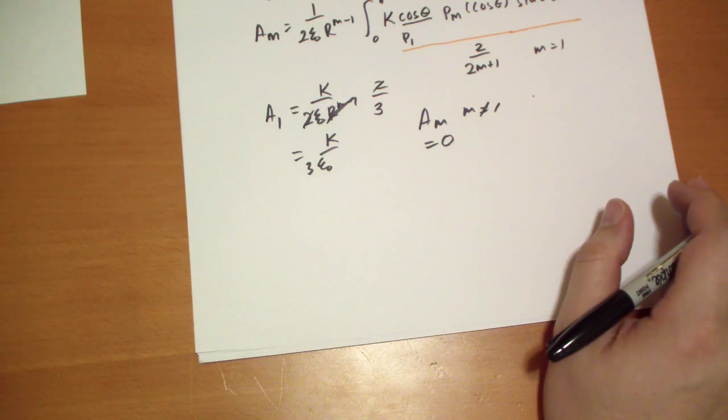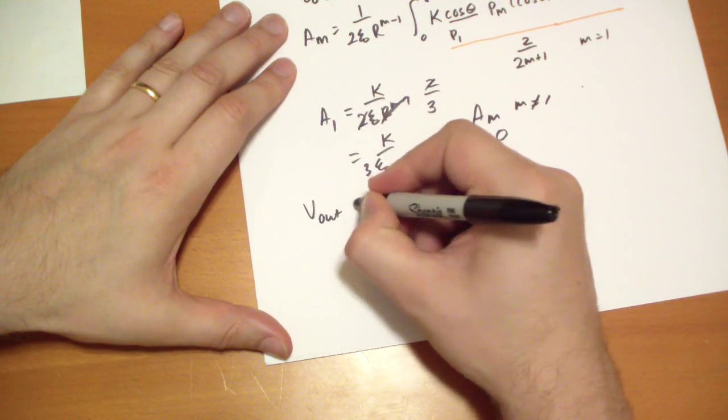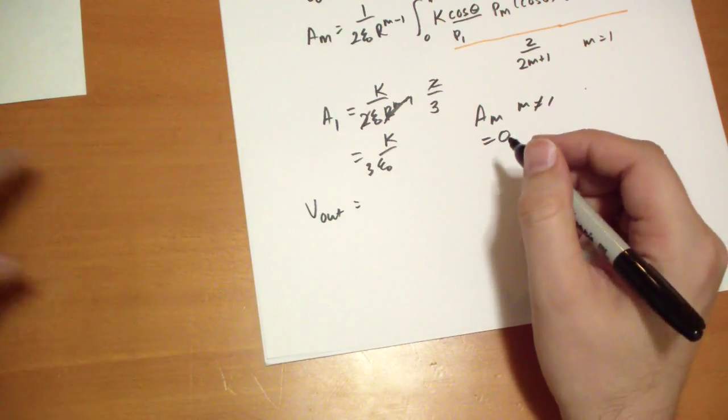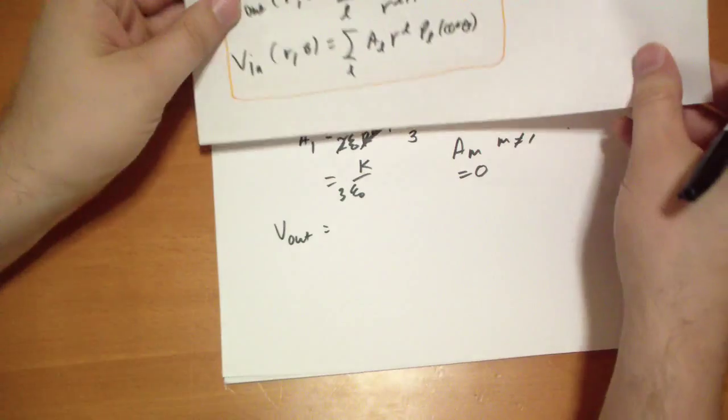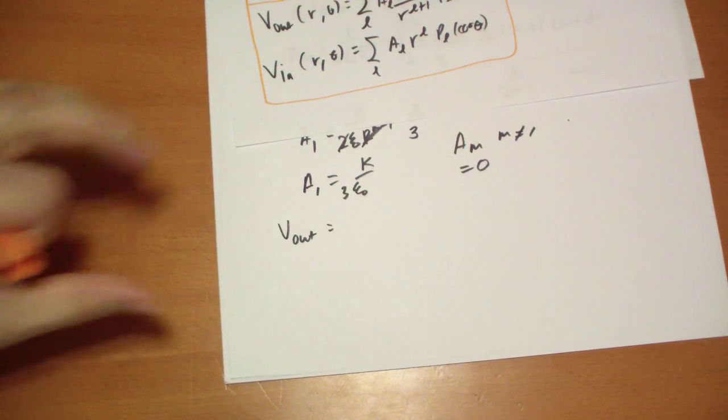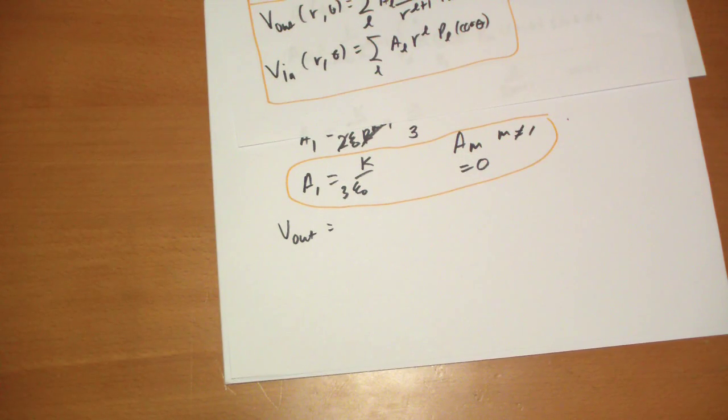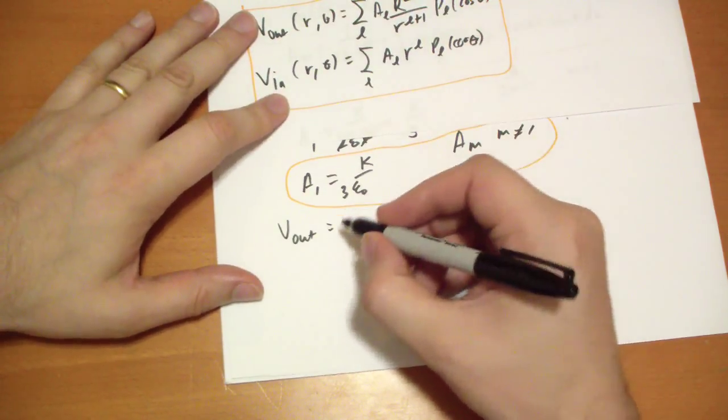Okay? So plugging that back into our potentials, our potential outside becomes... Let's bring this up for reference. We should probably circle this result. And a_m, where m is not equal to 1, is 0.